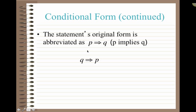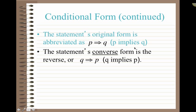So, the statement's original form is abbreviated P arrow Q. But we say P implies Q. Or sometimes you'll say, if P then Q. Now, an important term for this next section, and for the rest of the semester, is this idea of a converse. The statement's converse is when you flip the hypothesis and the conclusion. So, Q implies P. The converse often looks and sounds as though it's true. But it's not. And we'll explore that a little bit later.